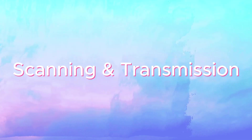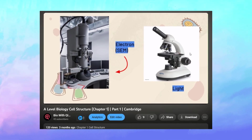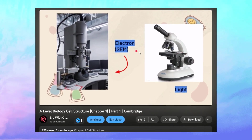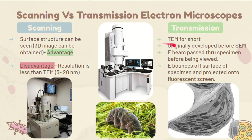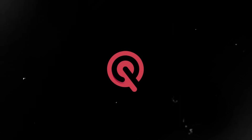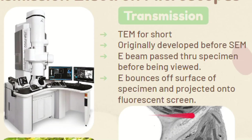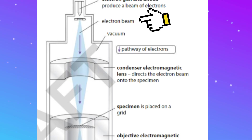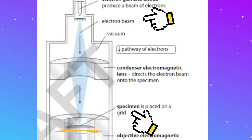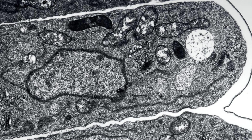Scanning and transmission electron microscopes. Let's get transmission electron microscopes — TEM for short — out of the way first. These were originally developed before SEMs, and keeping it simple, what happens is an electron beam is passed through the specimen before being viewed. Only the electrons that pass through the specimen are seen, enabling us to see inside the cells.